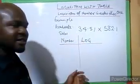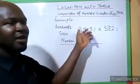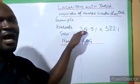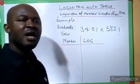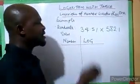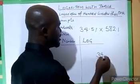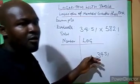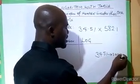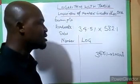The first thing you do is write down the log of the numbers you are dealing with. Before you do that, you need to know that every log number has two parts: the characteristic part and the mantissa. The characteristic part is determined by knowing the standard form of the number. For example, to find the standard form of 34.51, you write it as 3.451 times 10 raised to power one.